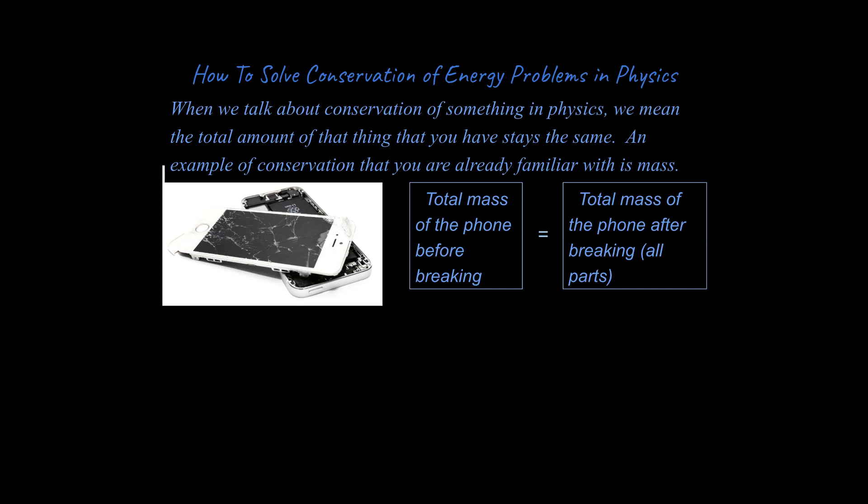First off, I want to talk about what we mean when we're talking about the conservation of something in physics. We mean the total amount of something, whatever it is you have before an event, is equal to the total amount of something you have after the event.